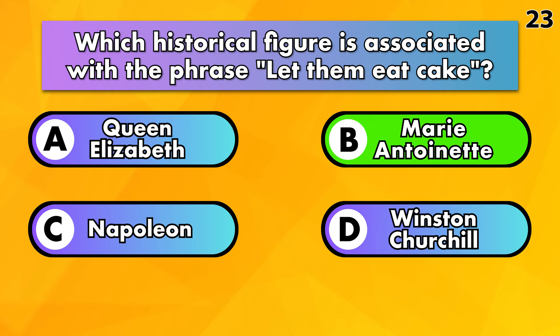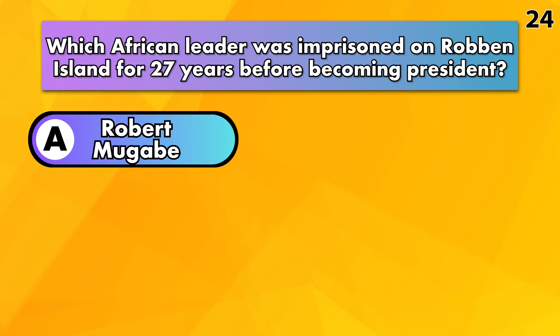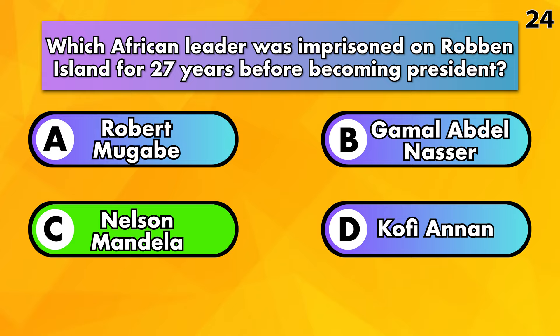Which African leader was imprisoned on Robben Island for 27 years before becoming president? Robert Mugabe, Gamal Abdel Nasser, Nelson Mandela or Kofi Annan? The answer is Nelson Mandela.